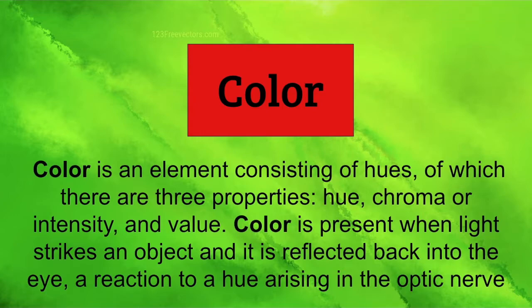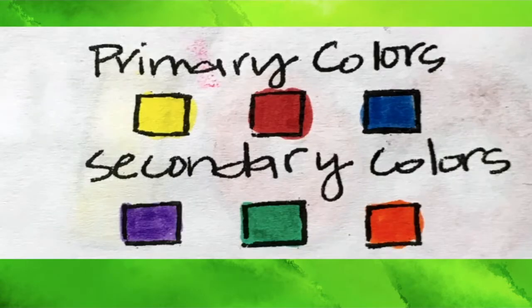When we're talking about color, we're using color in different ways. So we need to understand all the different aspects of color. The primary colors are yellow, blue, and red. From these three colors we can mix them together to create our secondary colors.